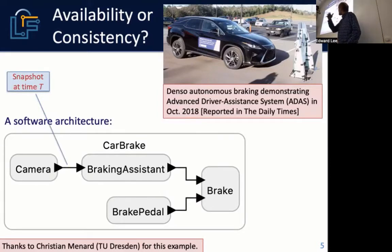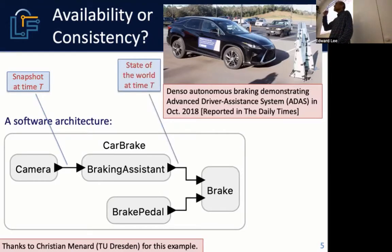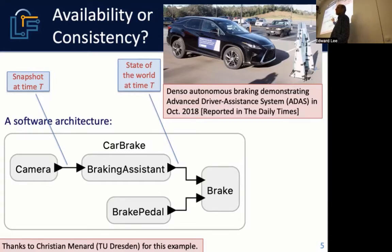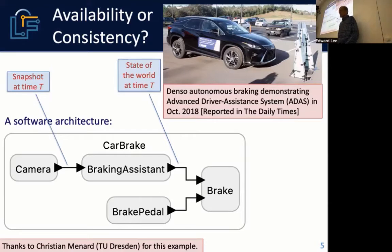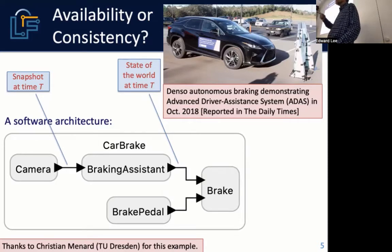The camera takes a snapshot at some time T, and that snapshot represents the state of the physical world at time T. The image analysis also produces a representation of the state of the world at that same time T, but it takes some time to perform the analysis. If you're using an advanced neural network system, this could even be done in the cloud — some automotive vendors have been experimenting with 5G communication for relatively low latency cloud-based image analysis.